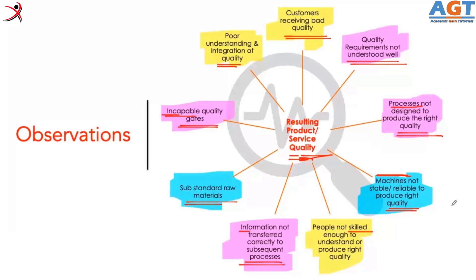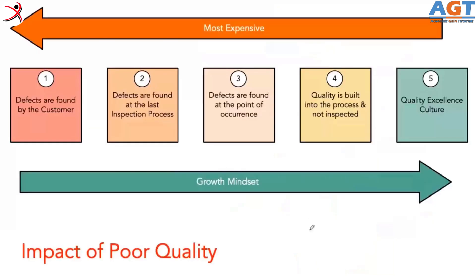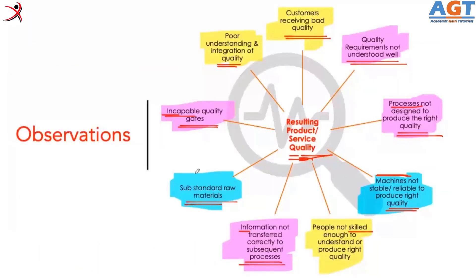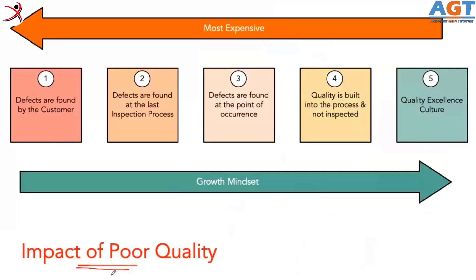So this is what we will see in later slides. If we try to understand the impact of poor quality — we now understand there are several factors that can lead to bad quality. If that happens, we will have a situation when the defects are found by the customer, which is not a good situation. Everything that could have been done by the factory has already reached the customer, who is now finding the defect.